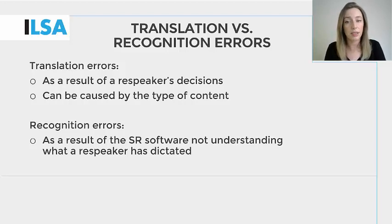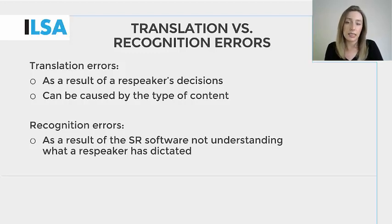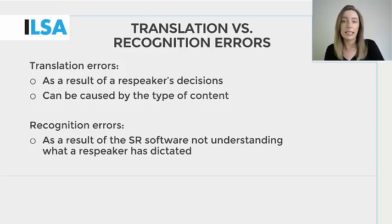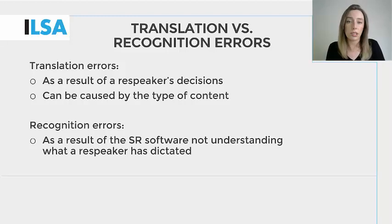The NTR model accounts for two types of errors: translation errors and recognition errors. Translation errors are a result of a re-speaker's decisions during the re-speaking process and the type of content that they are re-speaking. For example, if the speech rate of a video is very high, a re-speaker may opt to omit some text, causing an omission error. If dense information is included within a complex sentence, a re-speaker may choose to omit the text, or if they do re-speak it, they could run the risk of mistranslating it. Recognition errors are a result of the software not understanding what the re-speaker has dictated. To a certain extent, the re-speaker can also control recognition errors by dictating clearly, at a good pace and by training the speech recognition software. Ultimately, an easy way to refer to these is that translation errors are caused by a re-speaker and recognition errors are usually caused by the speech recognition software.